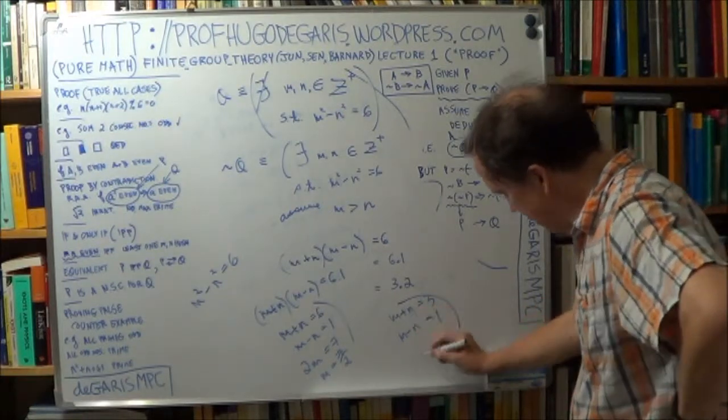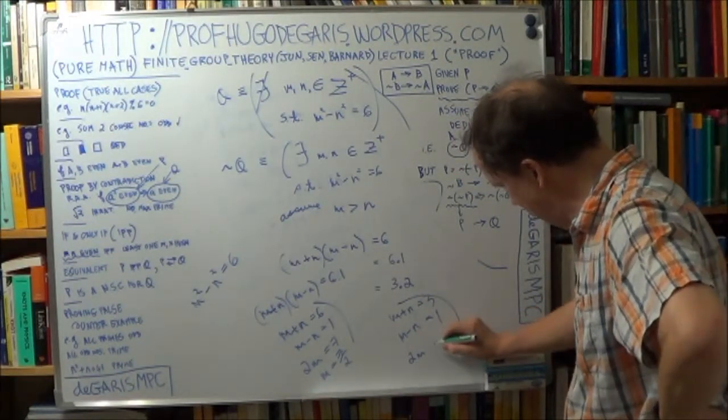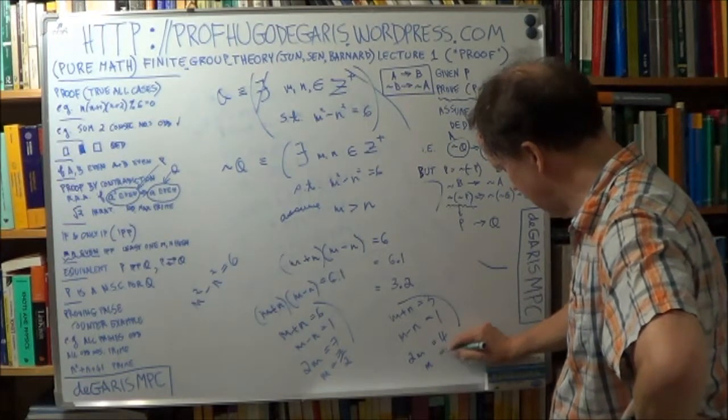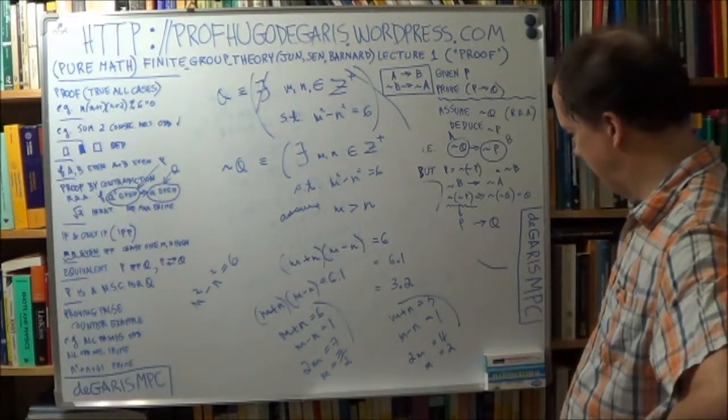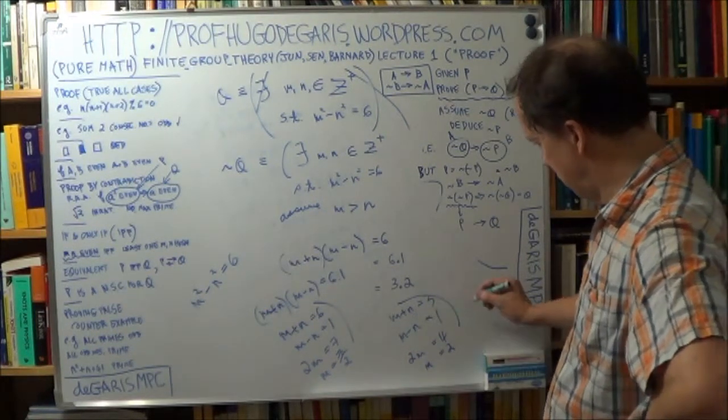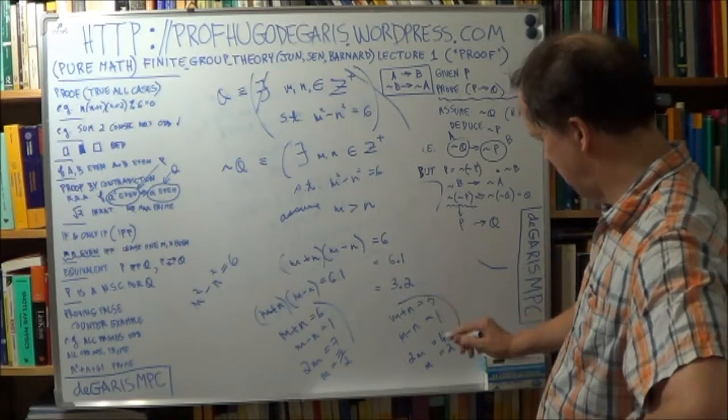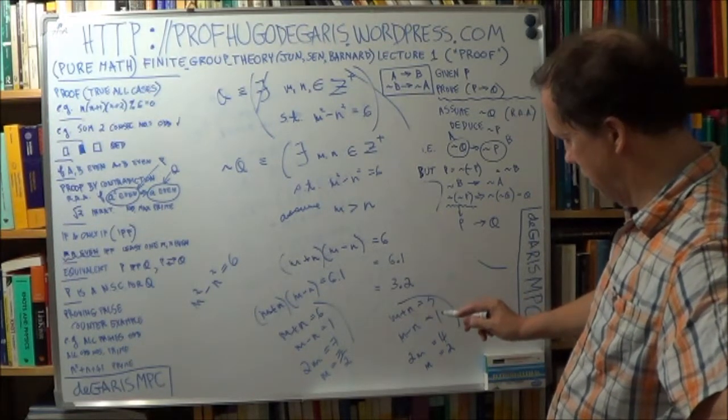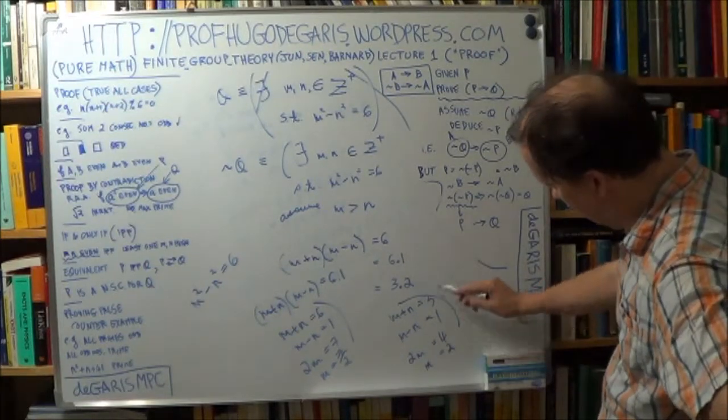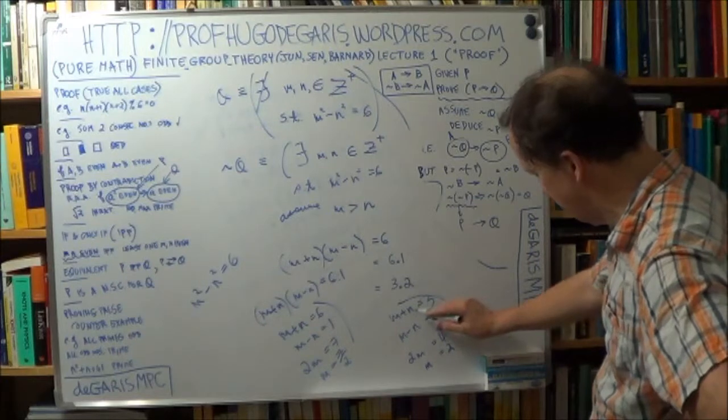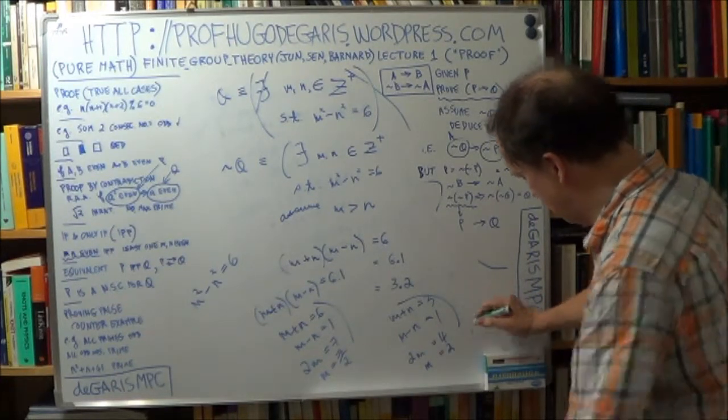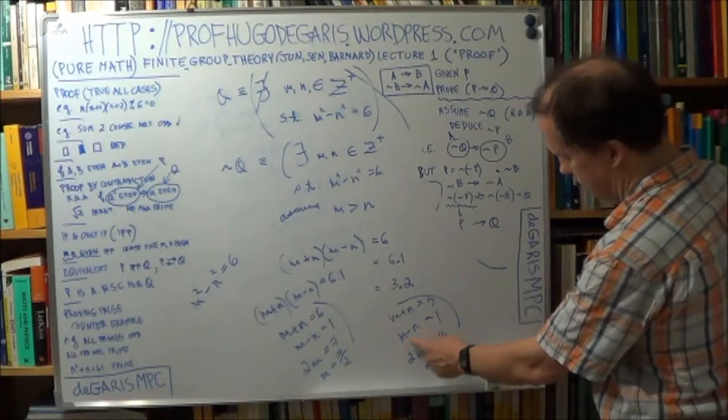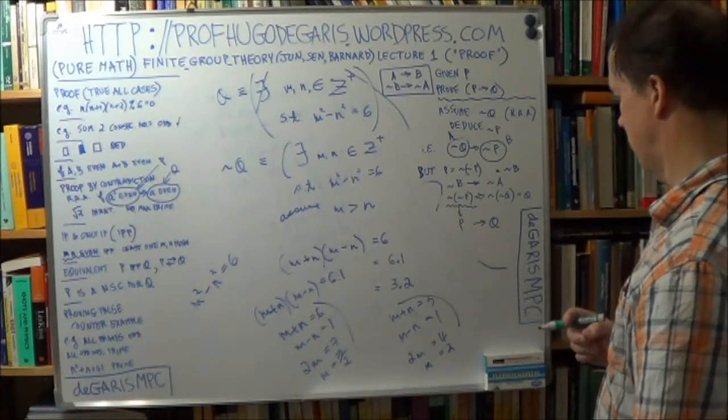Now how about this one? So again add, so you get 2m, the n's cancel, is 4. So m is 2, that's okay. What about n? If m is 2, n is 1. So from, so plug in the 2 here, and then n is 1. 2 minus 1 is 1, so that's okay.